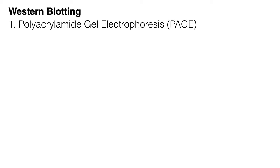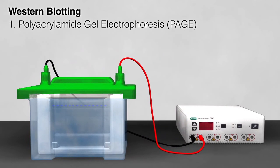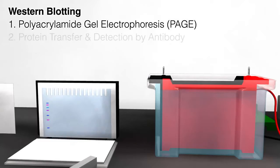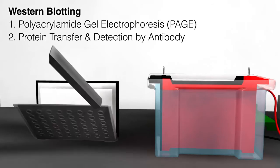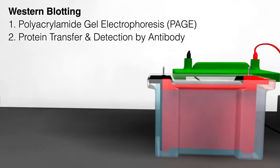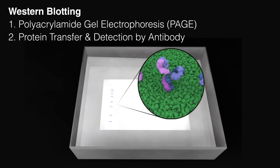Western blotting can be divided into two phases. In the first phase, proteins are loaded onto a gel and separated from one another using an electrical current during polyacrylamide gel electrophoresis, or PAGE. Then, in the second phase, the separated proteins are transferred onto a membrane, and the protein of interest is visualized using a protein-specific antibody.